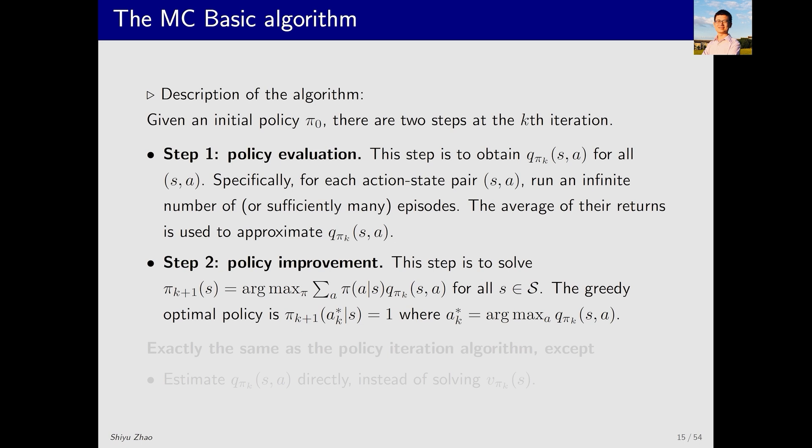Experience. Up to this point, the algorithm has gradually become clear. This algorithm is called MCBasic, with MC being an abbreviation for Monte Carlo. Let's review the algorithm briefly. First, we start with an initial policy, which may not be optimal. We need to gradually improve it. In the kth iteration, it involves two steps: policy evaluation and policy improvement.